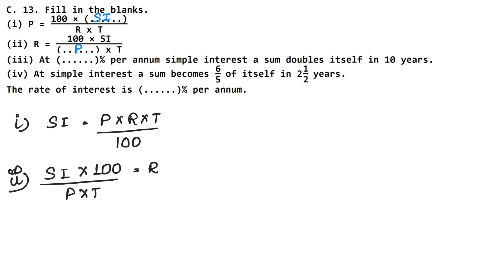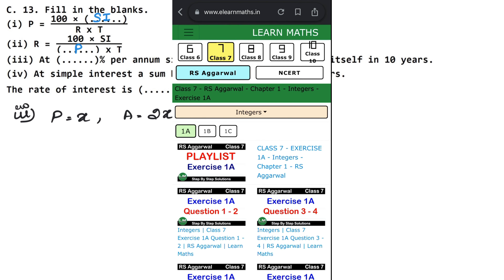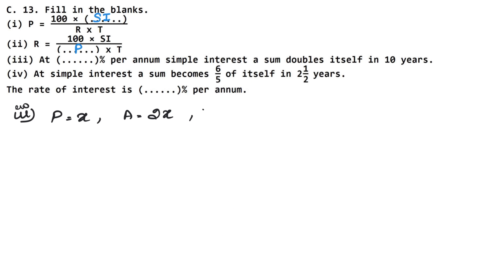Third part: at dash percent per annum simple interest a sum doubles itself in 10 years. Time is given as 10 years. Let principal = x; after 10 years the amount is double, i.e., 2x. So simple interest = amount − principal = 2x − x = x. Using SI = P×R×T/100, we get x = x×r×10/100. Cancelling 10 with 10, x = xr/10, so r = 10% per annum. We write 10 in the blank.